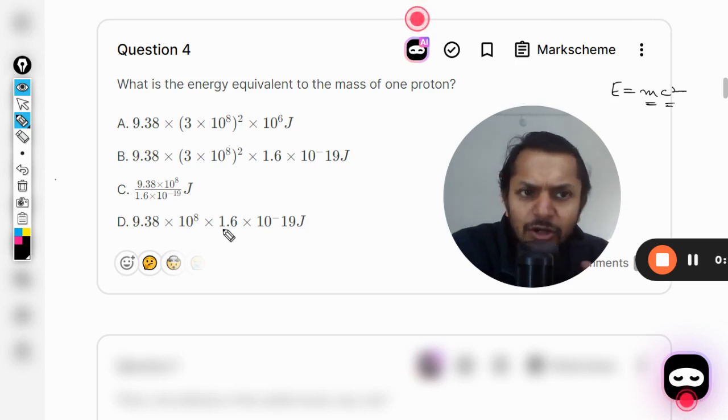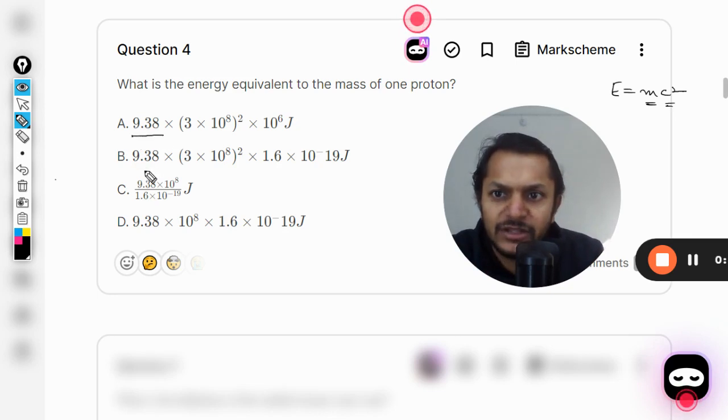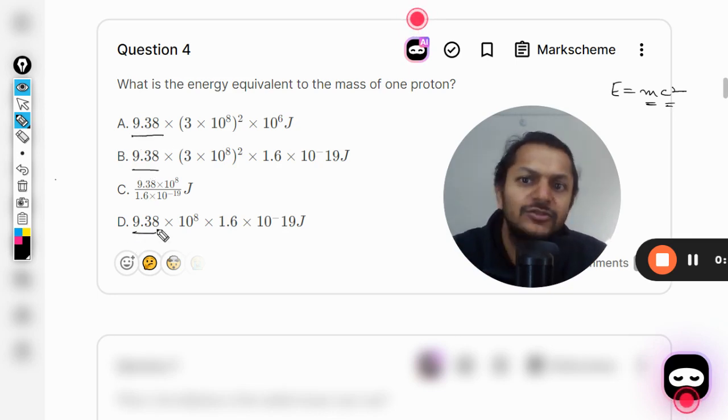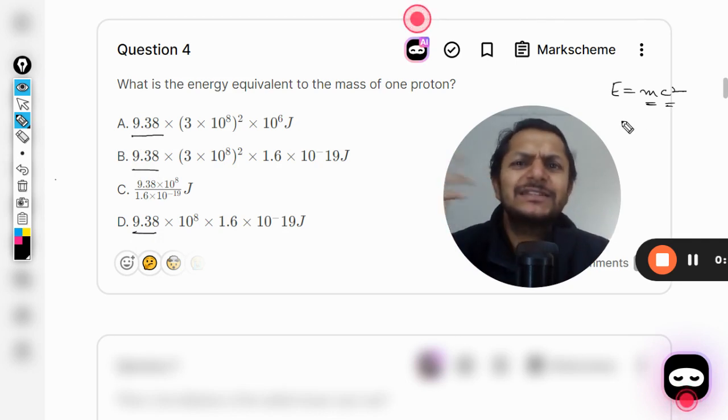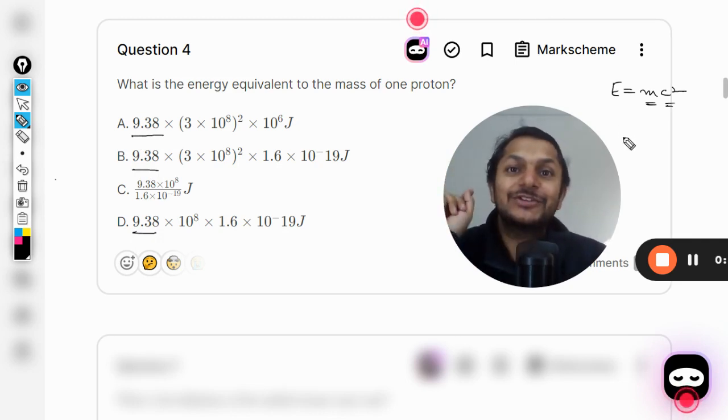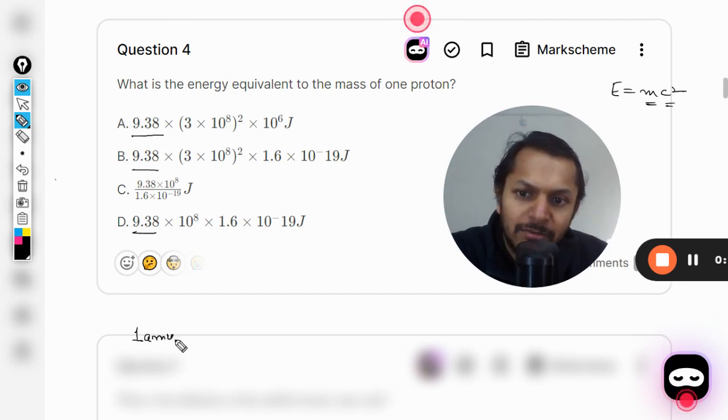That is not the method that they are using because the way they are writing it, like 9.338 does not occur from this equation at all. Have you ever seen something related with 9.3 or something? I tell you, one amu mass atomic mass unit when converted into energy results in 931.5 mega electron volt.